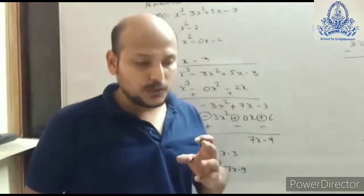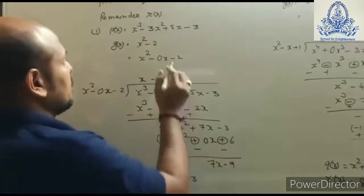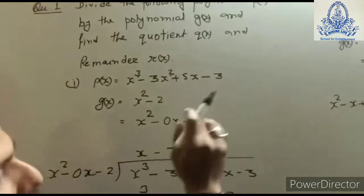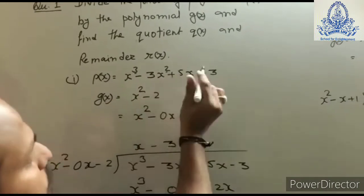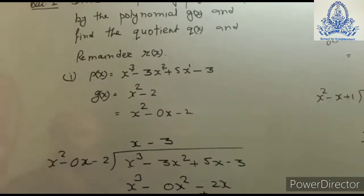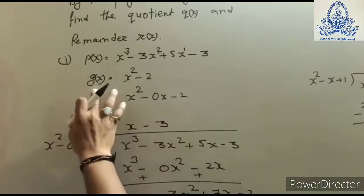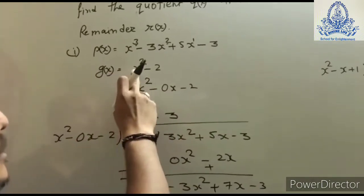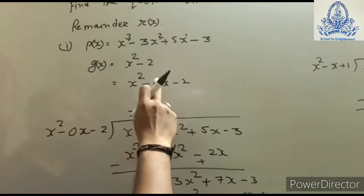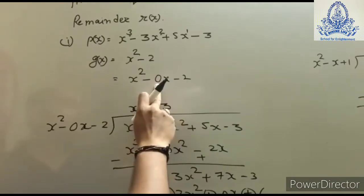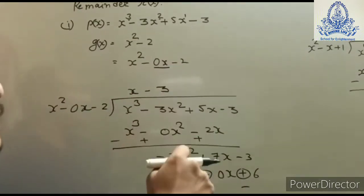Before solving, we must observe some important points. All the degrees of the terms must be in descending order. In p(x), the degrees go 3, 2, 1, and then the constant — that is the proper way. In g(x), you can see that x² is there but the term x is missing, so we add 0x, because multiplying by 0 gives it no value.